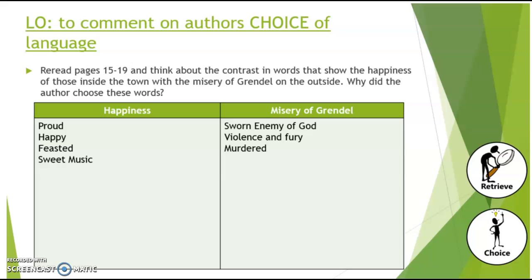And then Grendel's on the outside looking in, and language such as 'sworn enemy of God', 'violence and fury', 'murdered', 'slaughtered' — those are the type of words that are used. There's a really big contrast between the happiness of the town and how Grendel is on the outside. So go back through, look at pages 15 to 19, and then you can add your answers to the table on the task sheet.